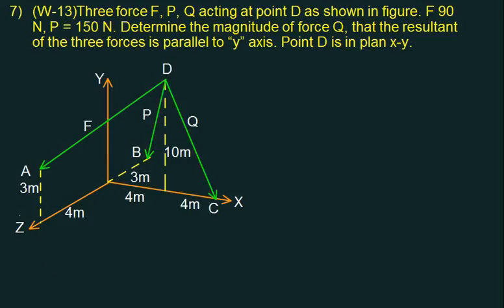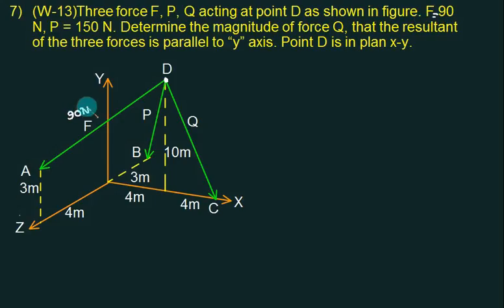We have a concurrent force system. One force is F, one force is P, one force is Q — are they passing through common point D? The force F equals 50 Newton, this force P is 150 Newton. We want to find out the force Q.